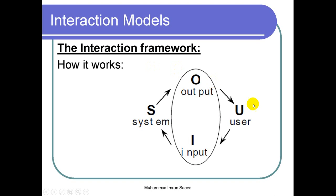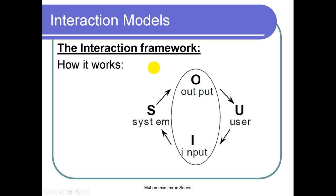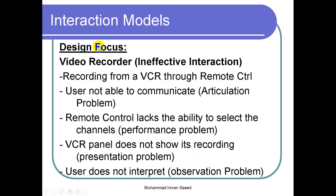It is the same diagram: the user provides the input to the system, the system processes and provides the output to the user. Now we have a design focus in the book that describes ineffective interaction. If a user provides the correct input and that input is taken by the system and processed, and then the system provides an output that is interpretable by the user, then it will be effective. But this design focus is discussing about ineffective interaction.